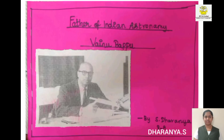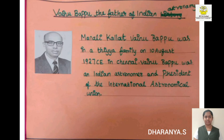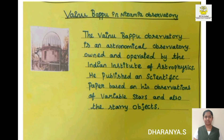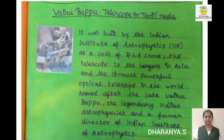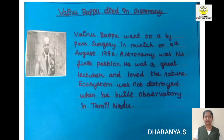I am Darnia from Class 8A and today I am going to speak about Vainu Bappu, the father of Indian astronomy. The Vainu Bappu Observatory is an astronomical observatory owned and operated by the Indian Institute of Astrophysics. He published a scientific paper based on his observations of variable stars and starry objects. The Vainu Bappu Observatory is located at Kavalur in the Jawadi Hills near Vaniyambadi in Tamil Nadu. His planning and vision were demonstrated through this observatory.